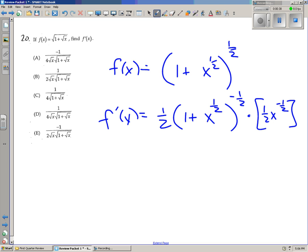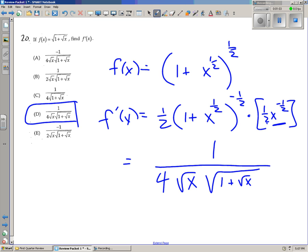Okay, now we have some algebra to do. So we have a half times a half, which is a quarter. So I want to make a big fraction bar. I want to put a 4 in the denominator and we have 1 plus x to the 1 half to the negative 1 half going down there. So that's a radical 1 plus radical x. And then we have another radical x going down there and a 1 upstairs. And this turns into choice D. Not too bad.